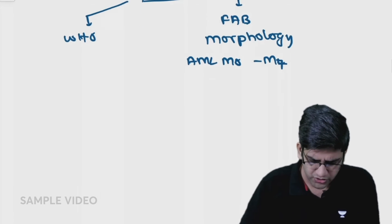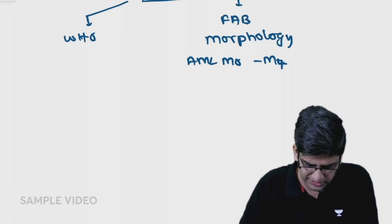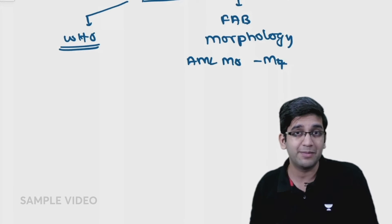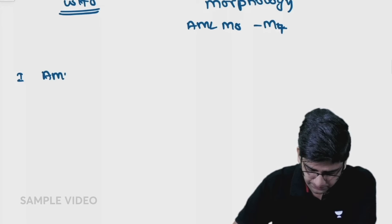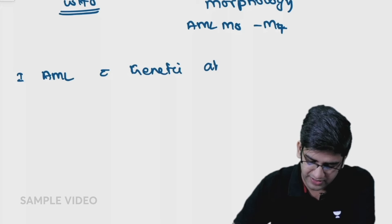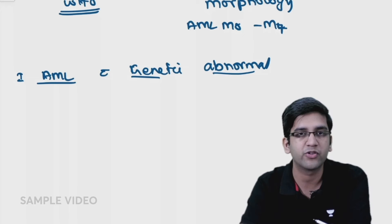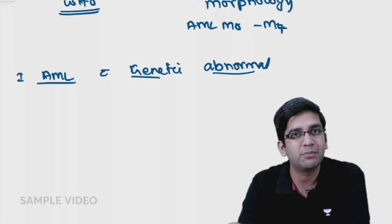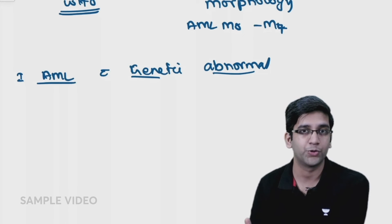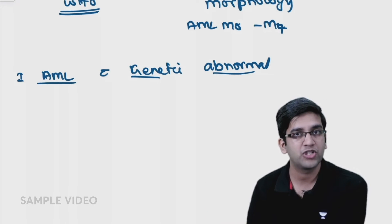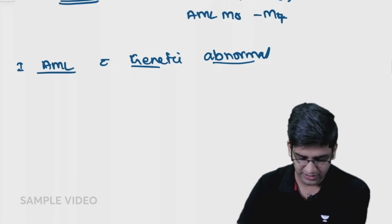I have recurrent cytogenetic abnormalities group, AML with myelodysplastic syndrome, therapy-related AML, and the morphological classification comes in WHO as AML not otherwise classified. Let's have a quick look at WHO classification. The first part is AML with recurrent genetic abnormalities.